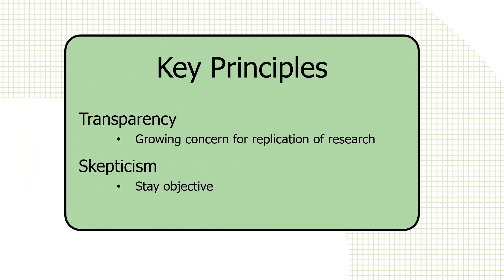There's a movement in political science now to have what are called replication data sets — when you write an article or produce some analysis, to archive your data and your computer code, whether you've used SPSS, Stata, or some other software, so that anyone can have access to what you did. Very transparent. And, of course, be dispassionate, like science is — dispassionate reporting of data and findings.